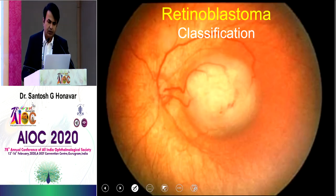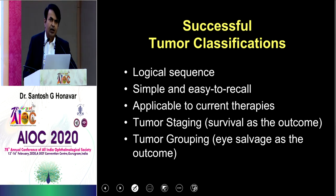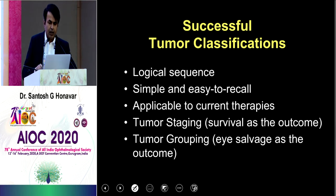Coming on to classification — it has to be very logical and simple to recall. Classification is important to prognosticate: you look at a child and tell parents that your child has group D retinoblastoma, so the chance of eye salvage is 80%. That's what you want to convey. There are two systems: staging, where survival is the outcome, and grouping, where eye salvage is the focus.